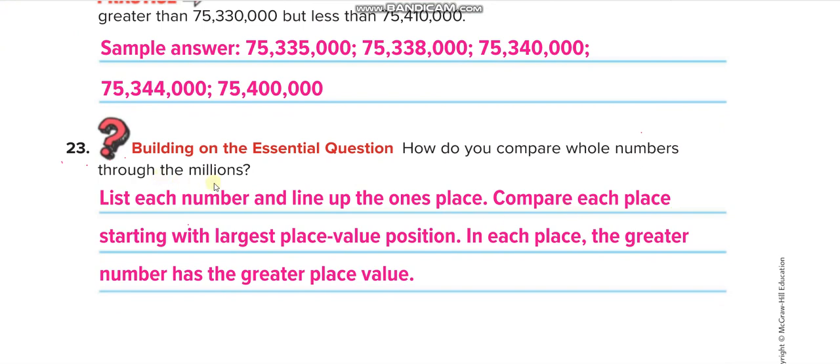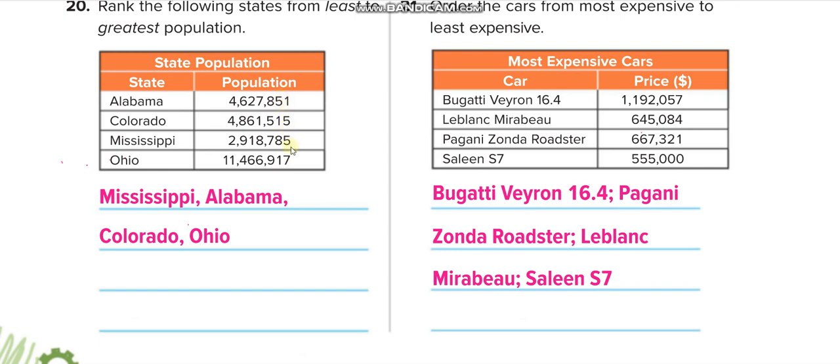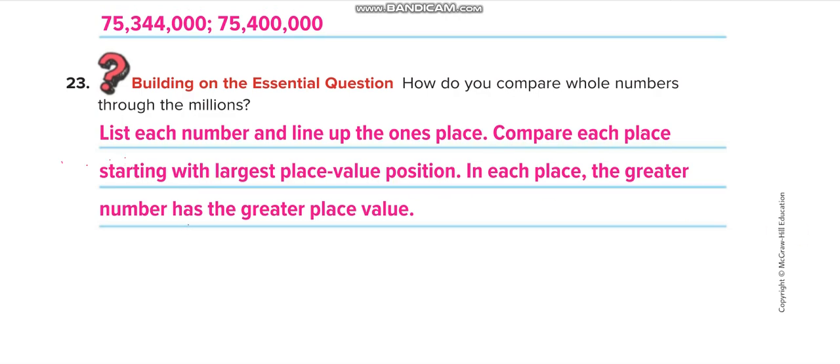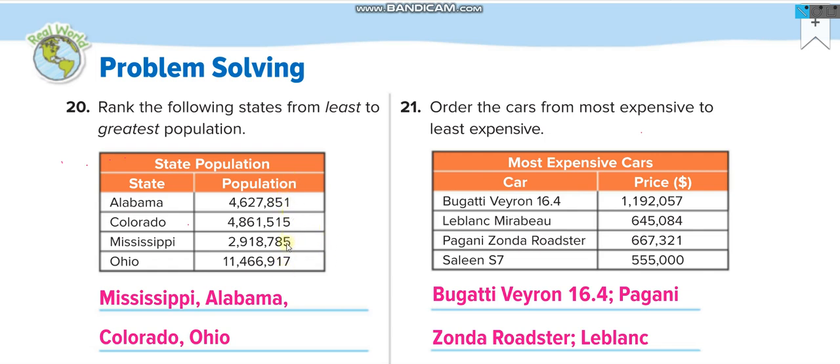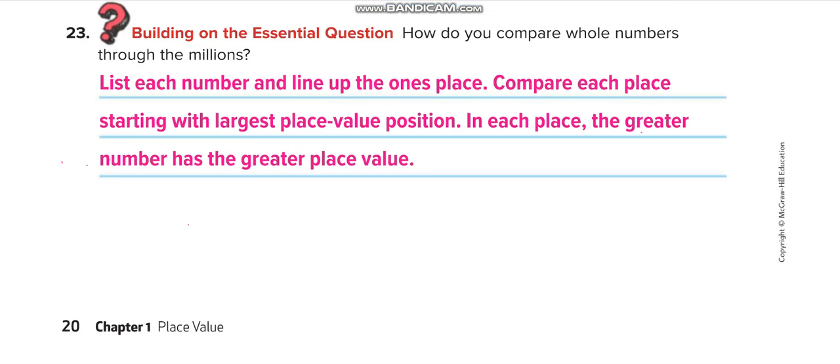How do you compare whole numbers through the millions? List each number and line up the ones place. Compare each place starting with the largest place value position. We line up the numbers with the ones, but we compare them with the greatest place value. In each place, the greater number has the greater place value. That's it. Have a nice day guys. Don't forget to solve your homework, page number 21 and 22.